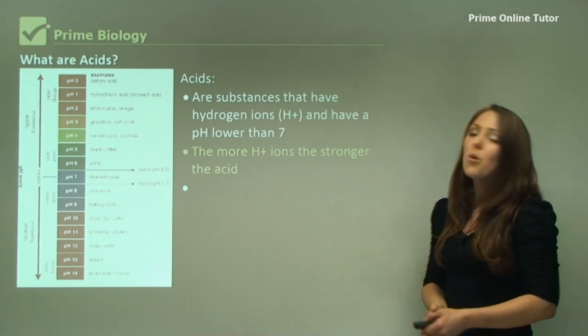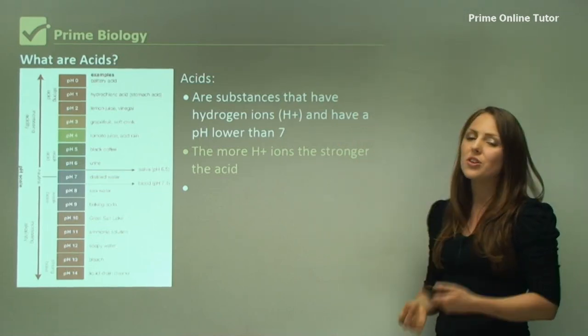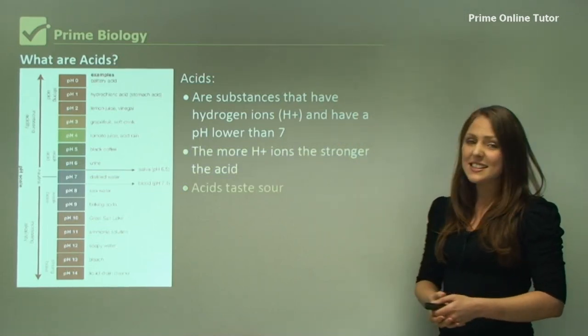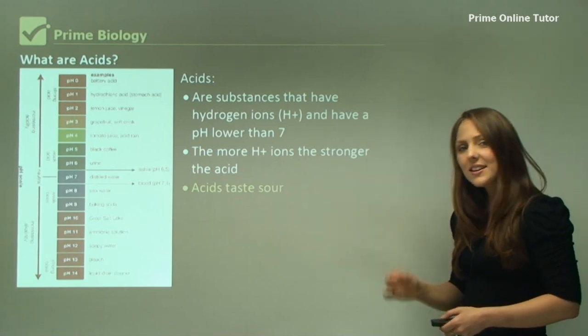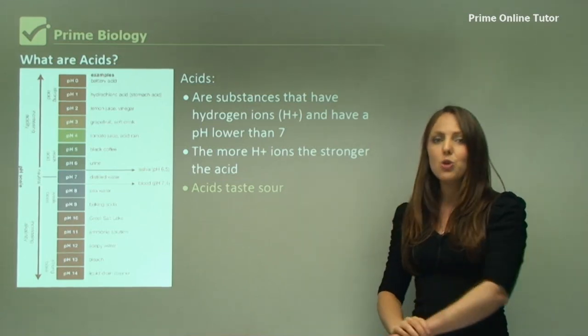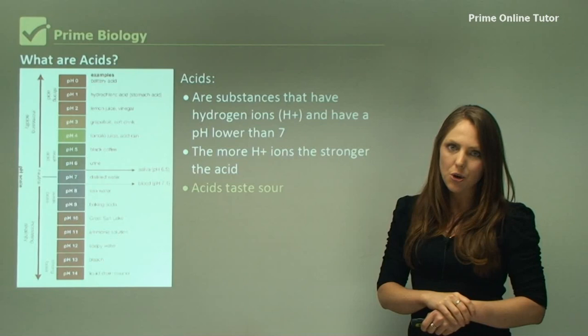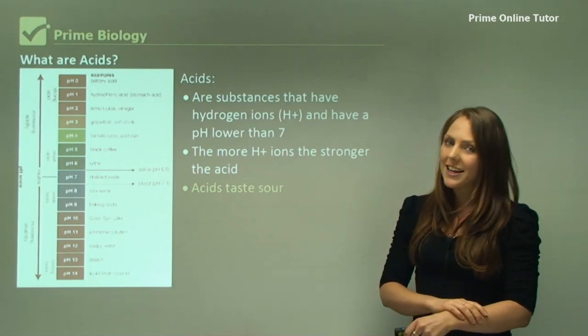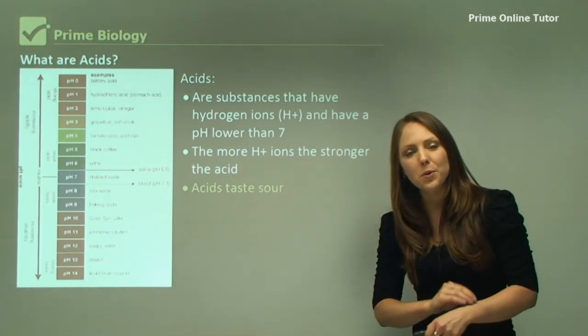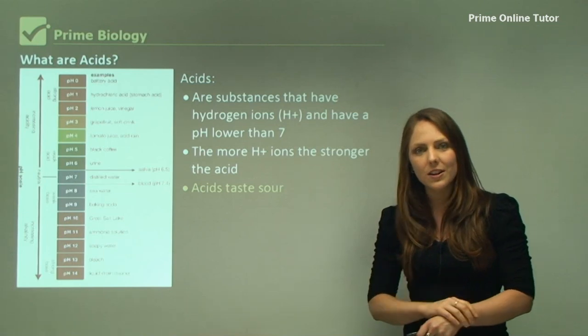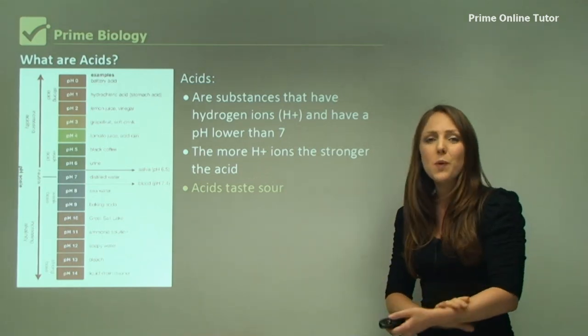On this scale here, urine is actually slightly acidic at six. The more hydrogen ions, the stronger the acid. Acids taste sour. In the laboratory, if you do get an acid on your skin, it's very important to wash it off, especially if it's a strong acid. Acids can burn your skin and you will actually feel it burning into you.